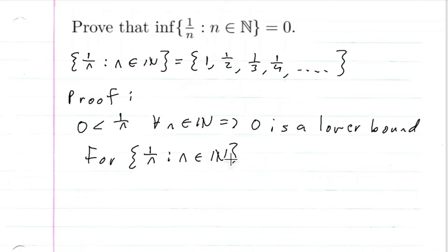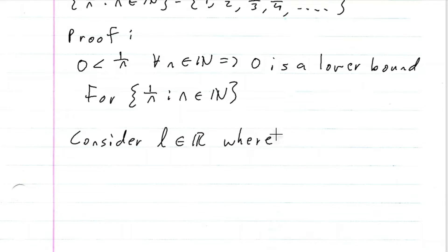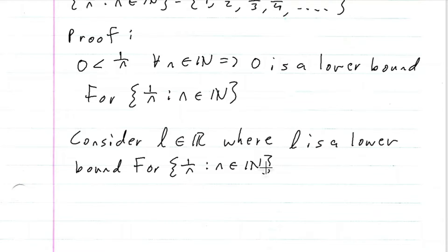What we're going to do is consider an L contained in the real numbers, where L is a lower bound as well — a lower bound for the set {1/n | n ∈ ℕ}.